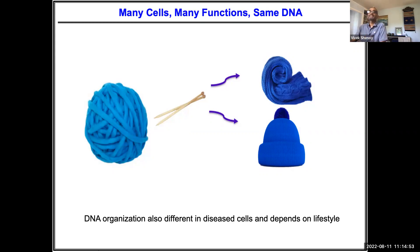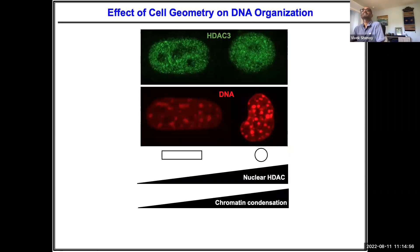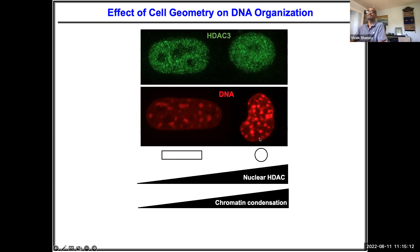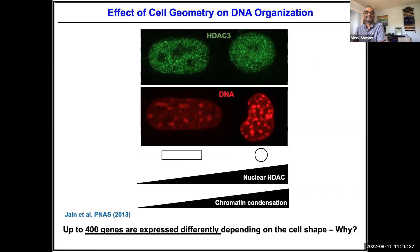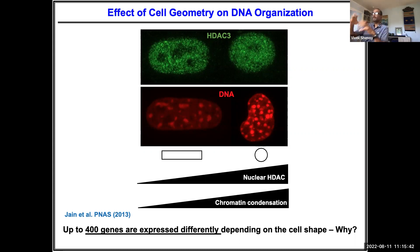Looking at cells on elongated versus circular substrates, there is more histone deacetylase in the nucleus of the elongated (stiff-phenotype) cells, and importantly a lot more chromatin condensation. Cells on soft substrates are more transcriptionally inactive compared to cells on stiff substrates, and up to 400 genes can be expressed differently between these two cases. To understand why, we need to look at how the microenvironment affects adhesions, the contractile machinery, and from there go on to talk about epigenetics.